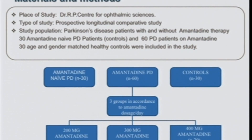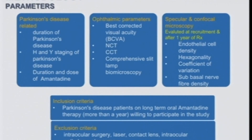This study was a prospective longitudinal comparative study conducted at Dr. R.P. Center. The study population included Parkinson's disease patients with and without amantadine therapy, and patients on amantadine were further subdivided into three subgroups based on dosage: 200, 300, and 400 mg. Parameters evaluated included Parkinson's disease-related parameters, ophthalmic parameters, and endothelial cell parameters. Inclusion criteria included Parkinson's disease patients on long-term oral amantadine therapy for more than one year.